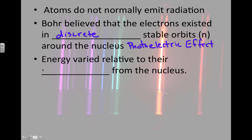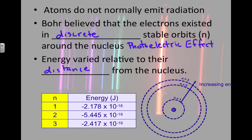And the energy varied relative to the distance the electrons were from the nucleus. So in energy level one, an electron would have this amount of energy. But at energy level two, as we get farther away, its energy went up higher. And so on.